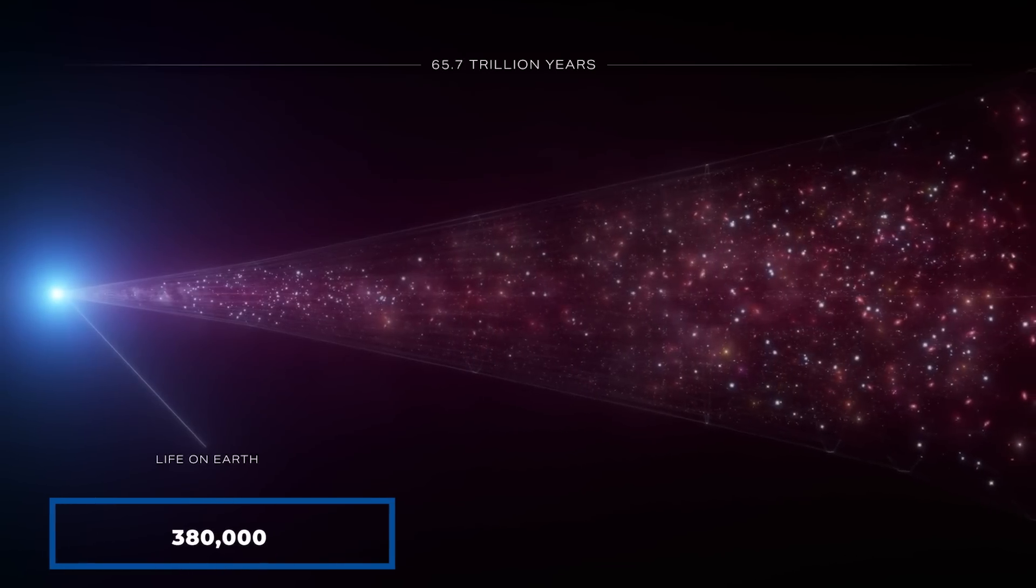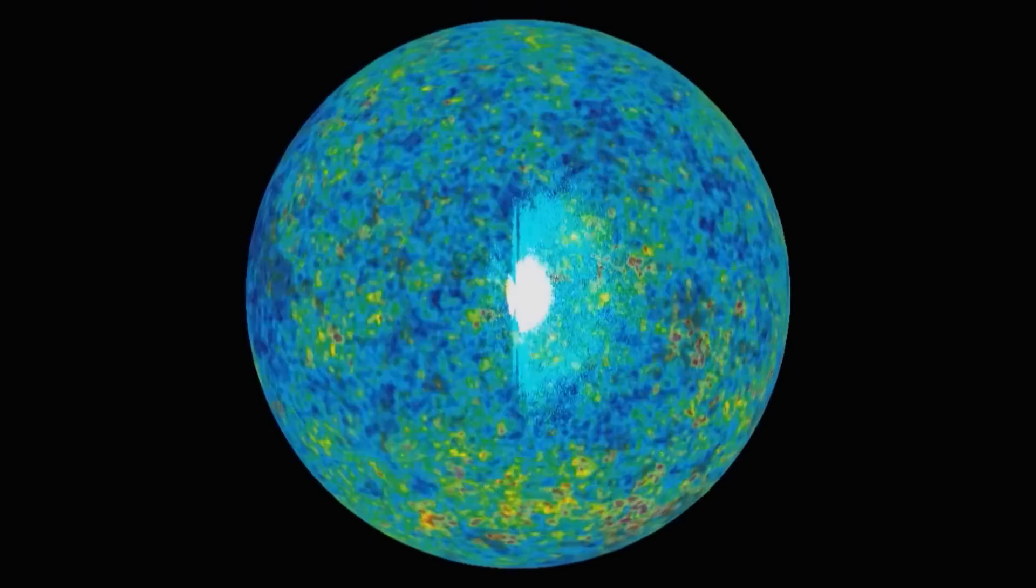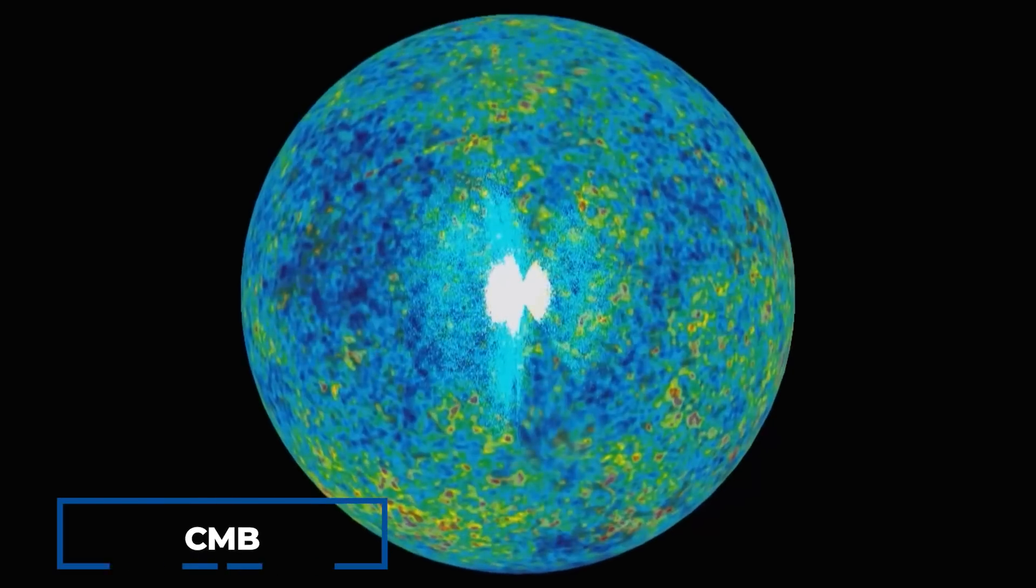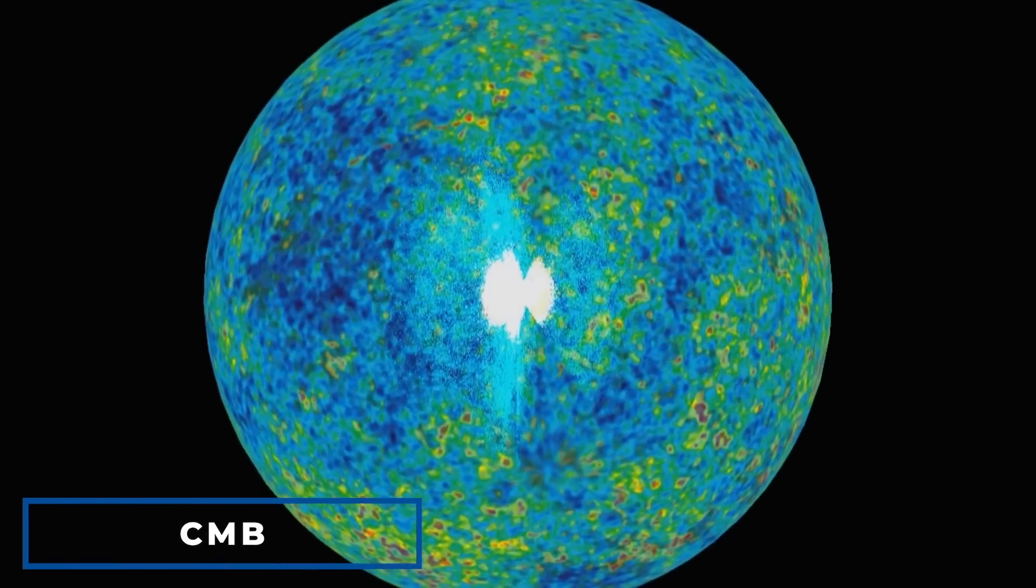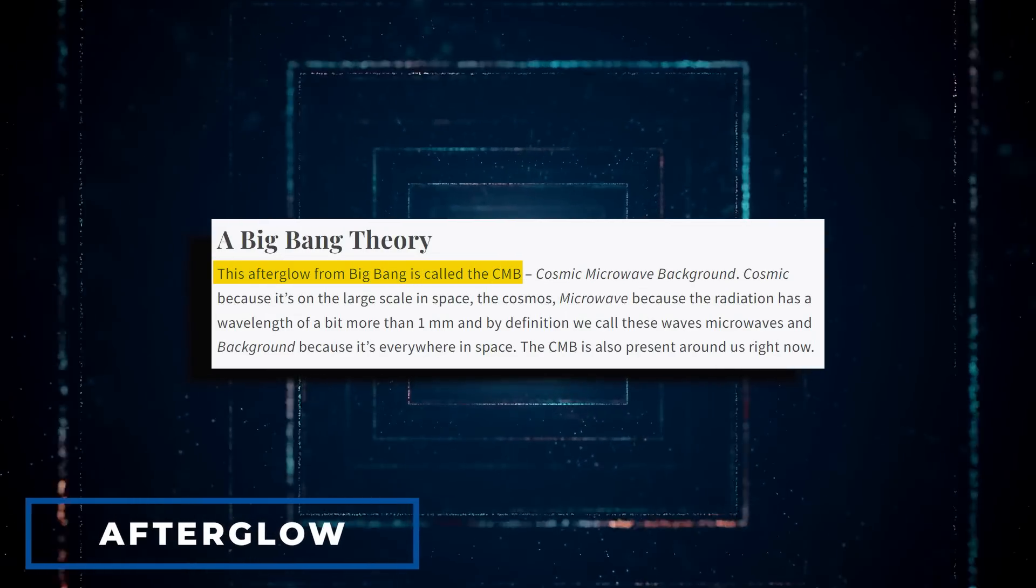Around 380,000 years after the Big Bang, this allowed light to eventually shine through. This light is more properly known as the Cosmic Microwave Background, CMB, and it is sometimes referred to as the afterglow of the Big Bang.